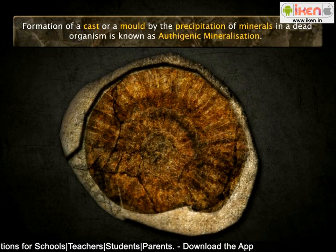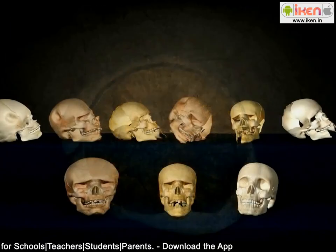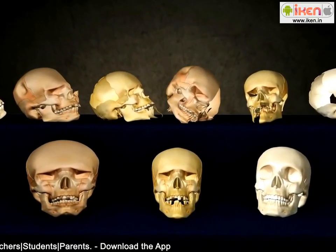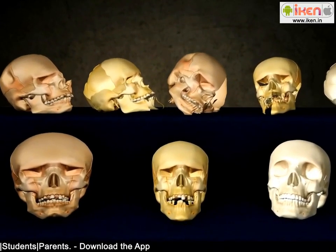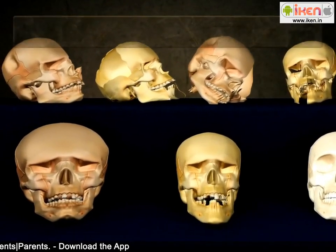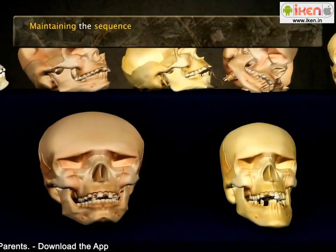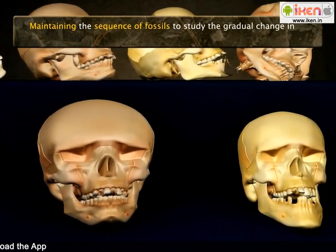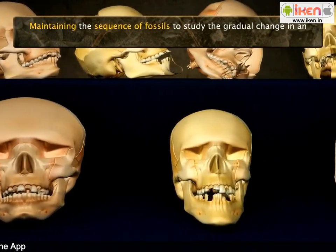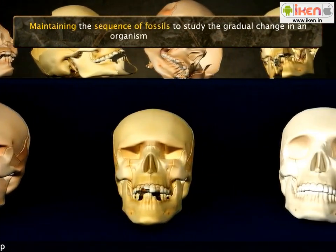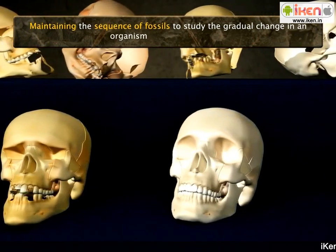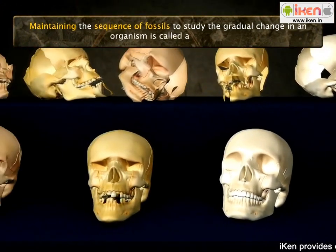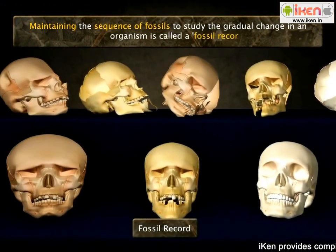Fossils can be dated from the age of the rock formation. Sequences of fossils can show the gradual change of an organism over geological time. This is called a fossil record.